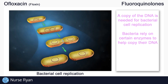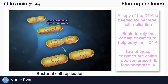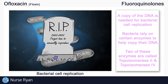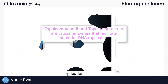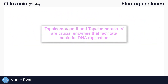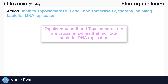Some of these very crucial enzymes are called topoisomerase 2 and topoisomerase 4. Without these two enzymes, bacterial cells would not be able to replicate, and eventually the bacteria would die off. Topoisomerase 2 and topoisomerase 4 are crucial enzymes that facilitate bacterial DNA replication. Fluoroquinolones work by inhibiting these two enzymes, thereby inhibiting bacterial DNA replication.